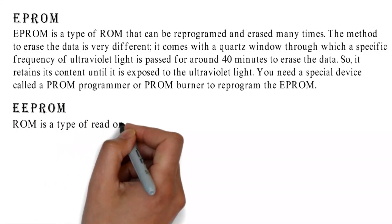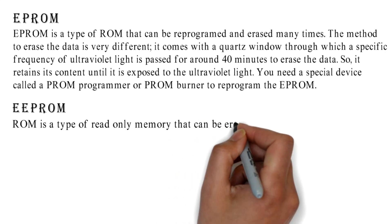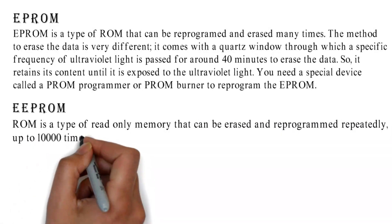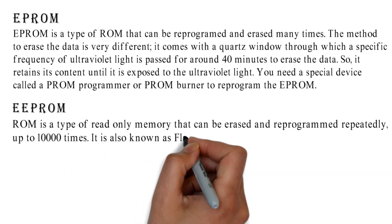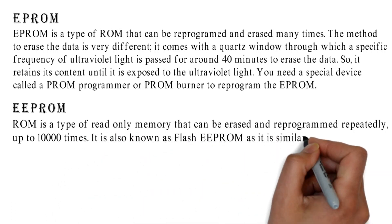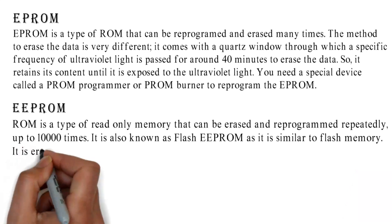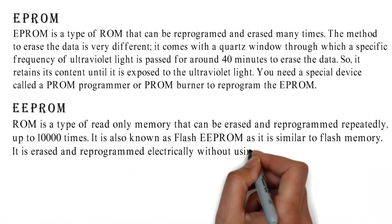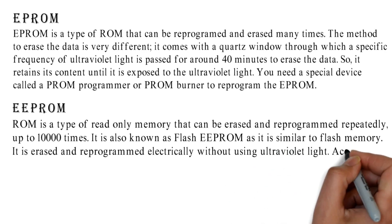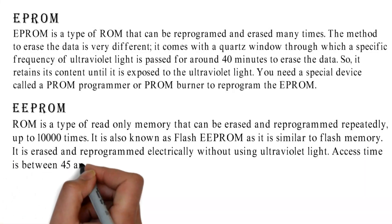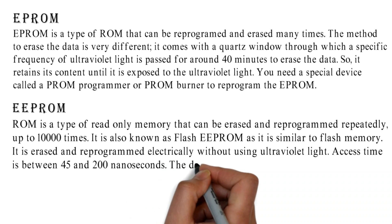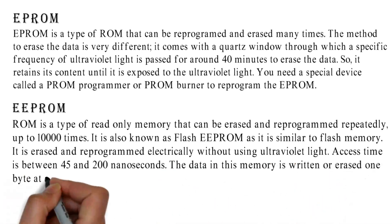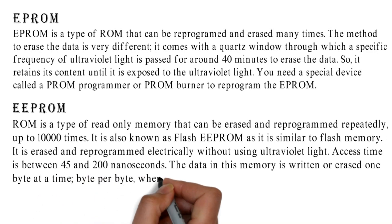EEPROM is a type of read-only memory that can be erased and reprogrammed repeatedly, up to 10,000 times. It is also known as flash EPROM as it is similar to flash memory. It is erased and reprogrammed electrically without using ultraviolet light. Access time is between 45 and 200 nanoseconds. The data in this memory is written or erased one byte at a time.